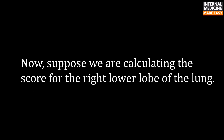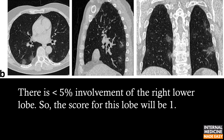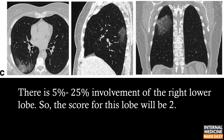Now, suppose we are calculating the score for the right lower lobe of the lung. In this CT, there is no involvement of the right lower lobe, so the score for this lobe will be 0. Here there is less than 5% involvement of the right lower lobe, so the score will be 1. Here there is 5 to 25% involvement of the right lower lobe, so the score for this lobe will be 2.